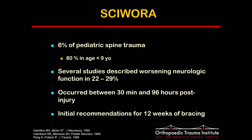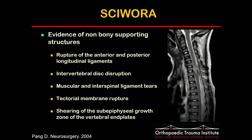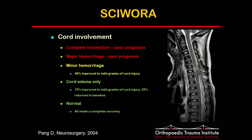The initial recommendations include 12 weeks of bracing. With the advent of MRI, we obtained more information and found significant evidence of injury to non-bony supporting structures, including ruptures of various ligaments, intraspinal ligament tears, and disc injuries. This is further enabled by weaker muscles and more horizontal facets allowing more vertebral body translation. From MRI evaluations, we now describe five classes of cord involvement. Patients with full transection and major hemorrhage had profoundly poor outcomes, but 40% with minor hemorrhage improved, whereas 70% with edema only attained mild grades, with 25% becoming normal. All patients with normal cord signals made a complete recovery.